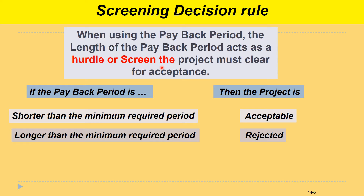The project must clear the hurdle for acceptance. If the payback period is shorter than the minimum required period, then it's acceptable. If it's longer than the minimum required period, then it's rejected. That's the usual screening decision rule.